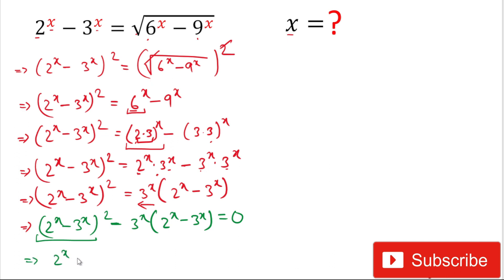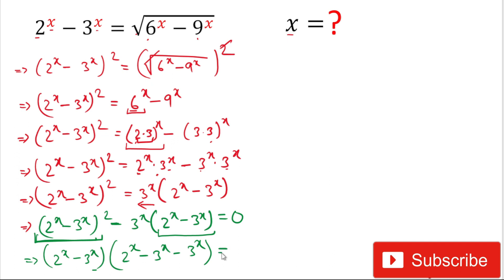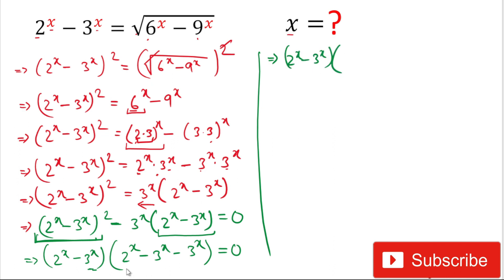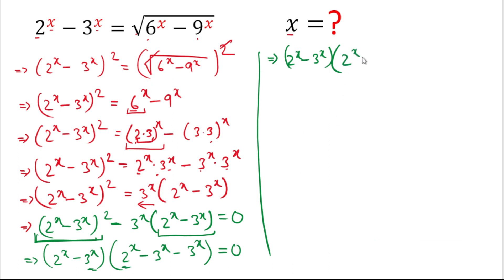Taking (2^x minus 3^x) as the common factor, the remaining terms give us the second bracket. After simplifying, we get: (2^x minus 3^x) times (2^x minus 2 times 3^x) equals 0. Since the product of two values is zero, either the first factor is zero or the second factor is zero.